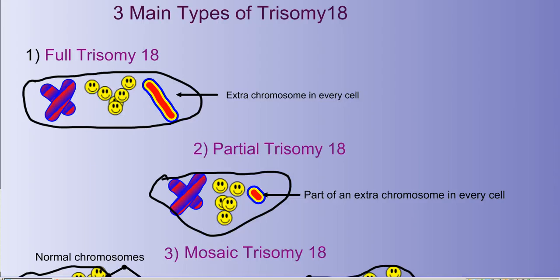There are three main types of Trisomy 18. The first one is Full Trisomy, where the extra chromosome is in every cell. You can see here how it has an extra chromosome.